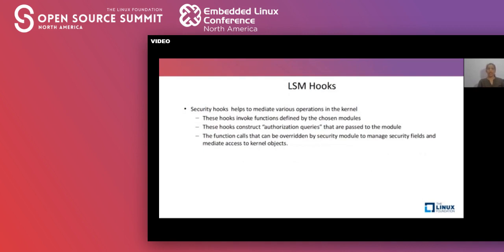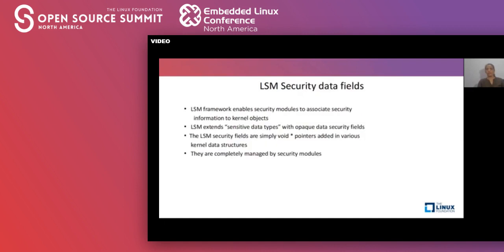LSM hooks help mediate various operations in the kernel. These hooks invoke functions defined by the chosen modules and construct authorization queries passed to the modules. The functions can be overwritten by the security module to manage security fields and mediate access to various kernel objects. The main component of the security module is the security data fields, which are added into various important kernel data structures. With the help of these security data fields, security information can be stored and mediated through the security modules.